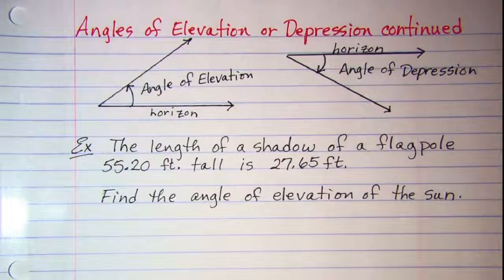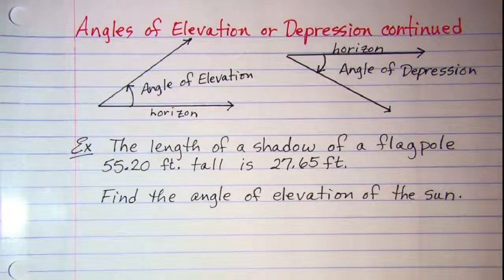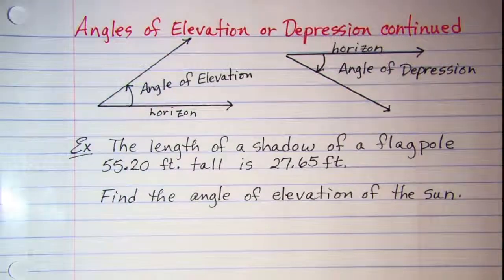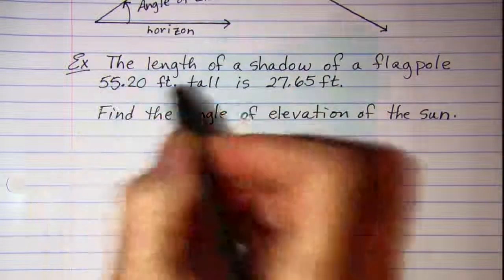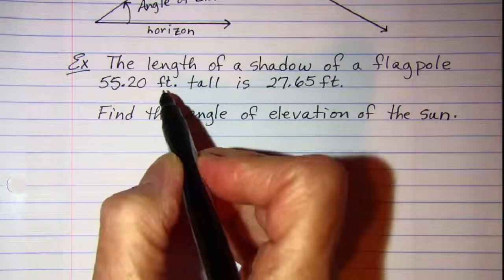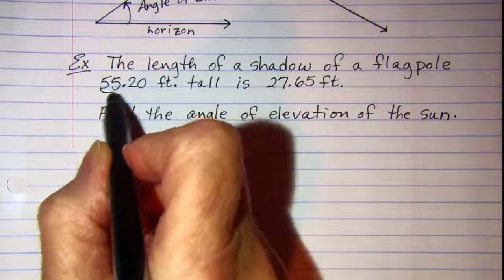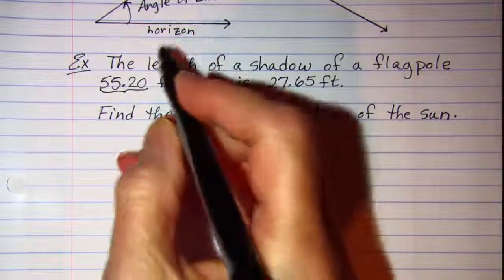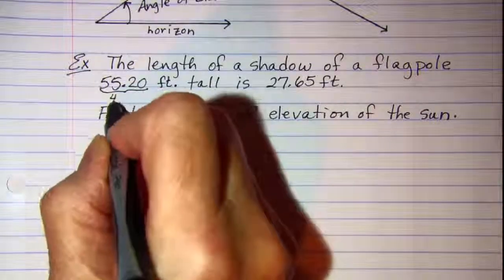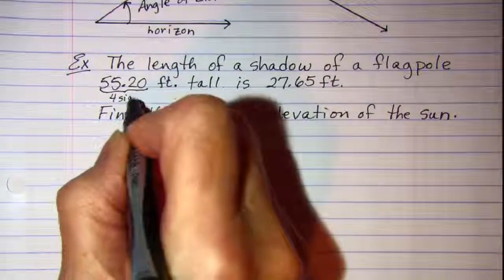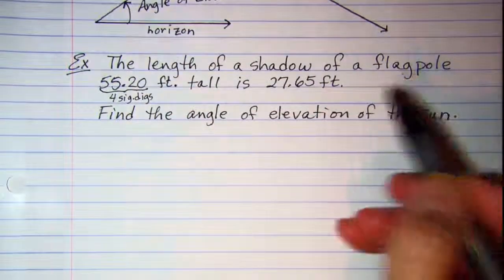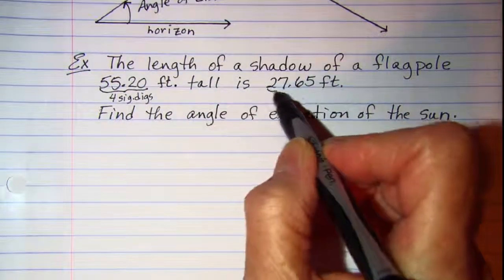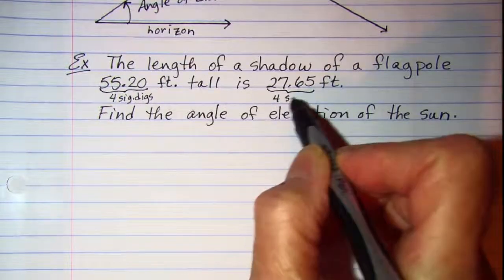Now before we draw our sketch, let's look at our significant digits. We see that the flagpole height has four significant digits, and the length of the shadow is also four significant digits.